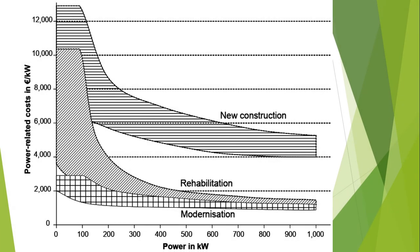An increase in plant size generally leads to significantly lower specific investment. For example, the specific investment for new plants with electrical power output below 100 kilowatt is between 7,700 to 12,800 euros per kilowatt, whereas for new plants with an electrical power of 1 to 10 megawatt, the specific investment is as low as 4,600 to 14,700 euros per kilowatt.